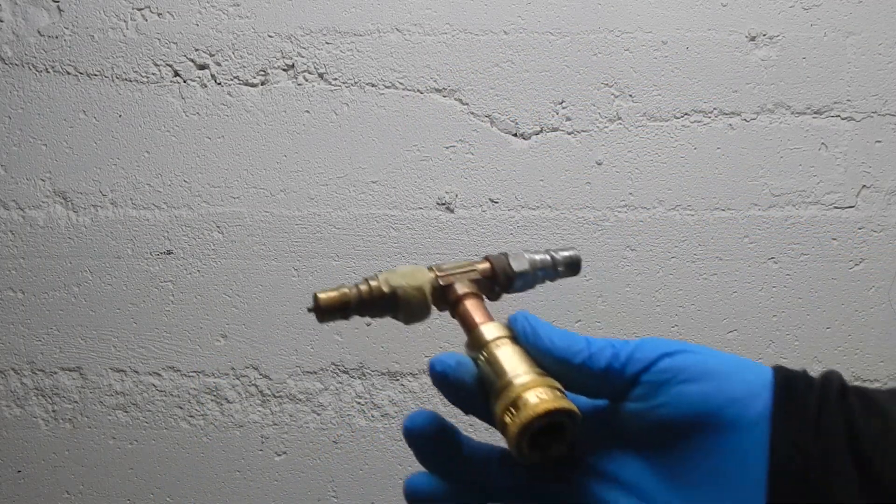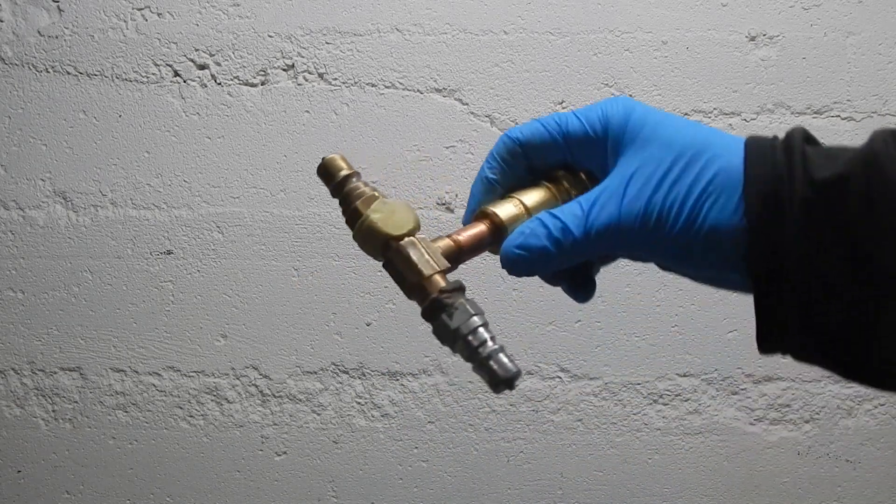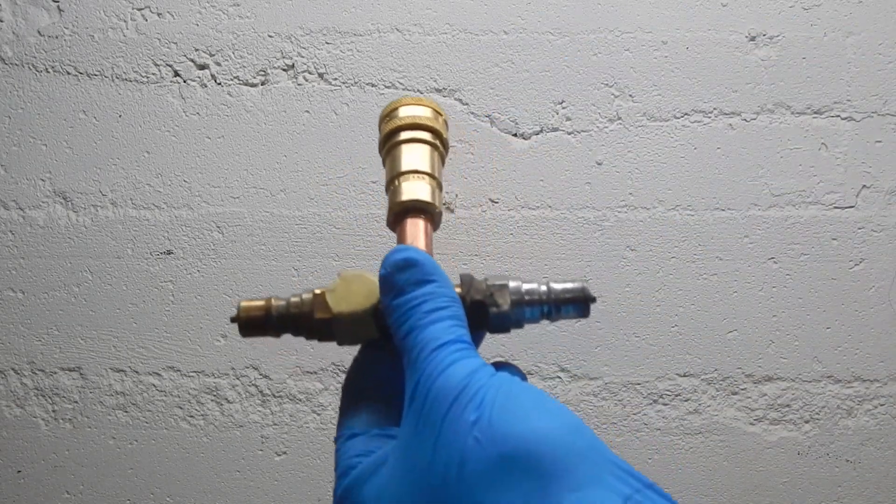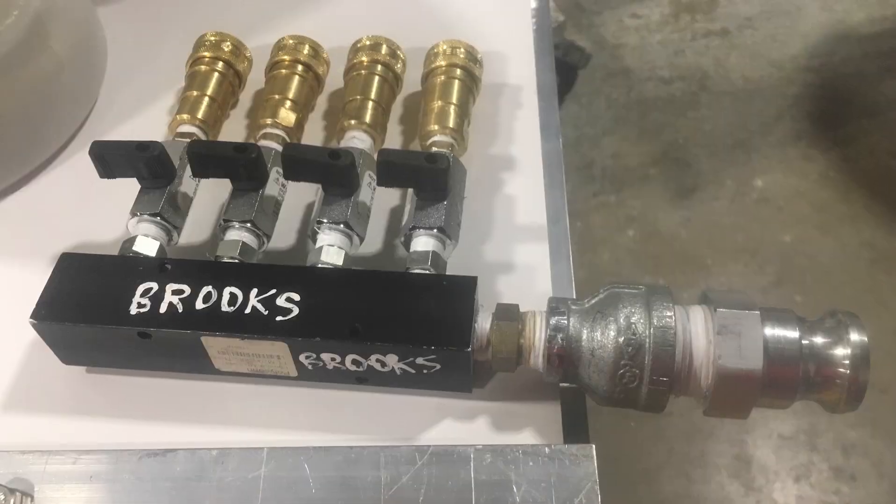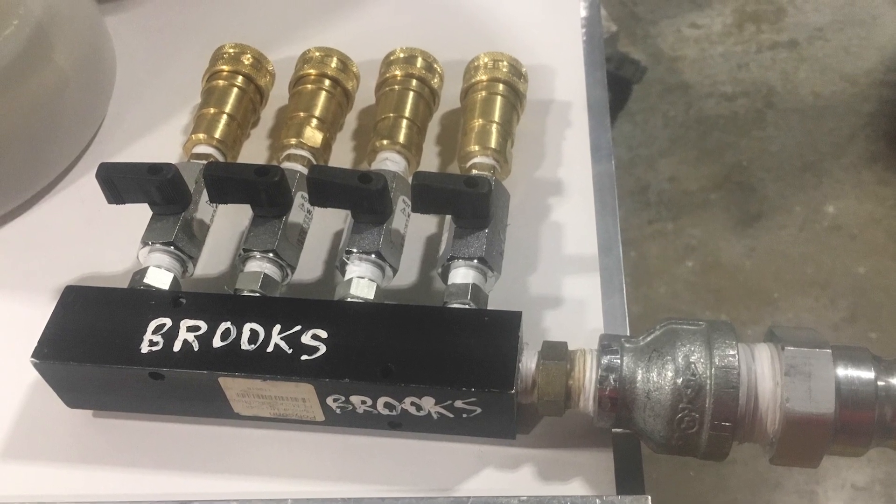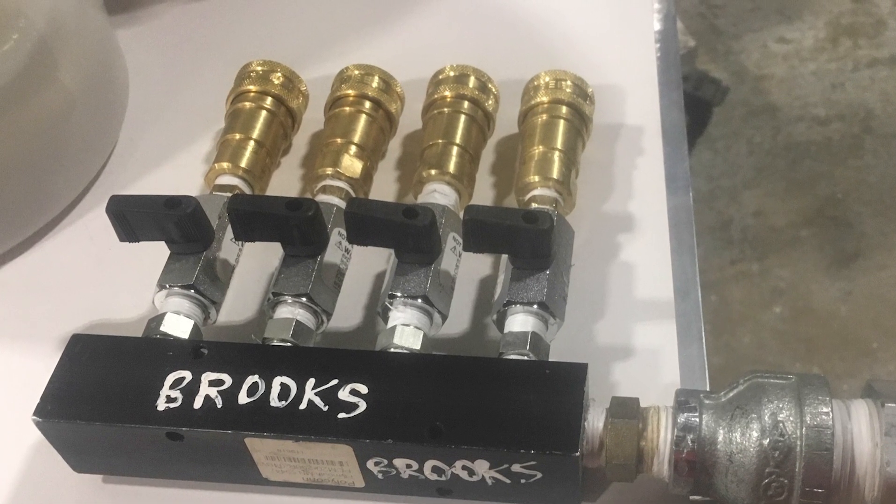Manifolds are useful for connecting multiple hoses to one vacuum source. Sometimes a splitter will do, or a three-way. For connecting a large hose to smaller ones, a bigger manifold like this is great. They can also be mounted to a wall or a vacuum pump cart.